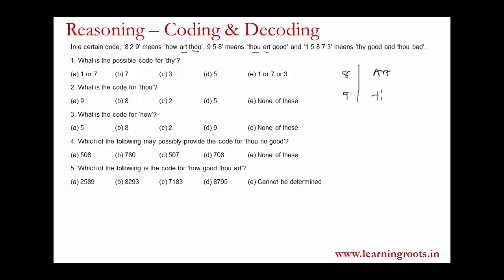So we make a notation — put art and thou in front of 8 and 9. This line indicates that we do not know the exact relation between 8, 9, art, and thou, but we know for a fact that 8 and 9 correspond to art and thou in some order. Since 8 and 9 are taken, 2 should correspond to 'how', so we write 2 — how. Developing this kind of language or notation is very important when solving papers. Every question requires a certain approach, and having your own language lets you solve more quickly rather than starting from scratch.